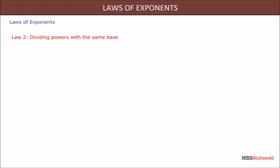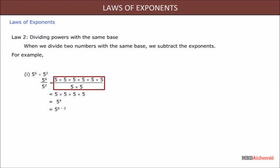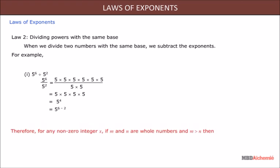Law 2: Dividing powers with the same base. When we divide two numbers with the same base, we subtract the exponents. For example, 5⁶ ÷ 5² = (5 × 5 × 5 × 5 × 5 × 5) ÷ (5 × 5) = 5 × 5 × 5 × 5 = 5⁴, which is 5^(6−2). Therefore, for any non-zero integer x, if m and n are whole numbers and m is greater than n, then x^m ÷ x^n = x^(m−n).